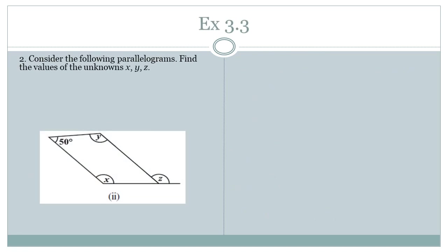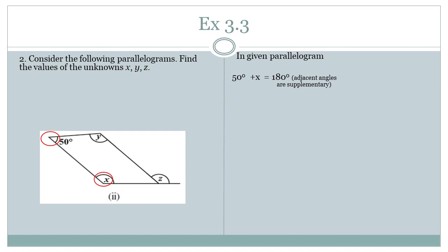Again, a parallelogram is given. First, focus on the two angles: 50 degrees and X. They make a pair of adjacent angles, and we know the sum of adjacent angles is 180 degrees. So 50° + X = 180°, giving us X equals 130 degrees.